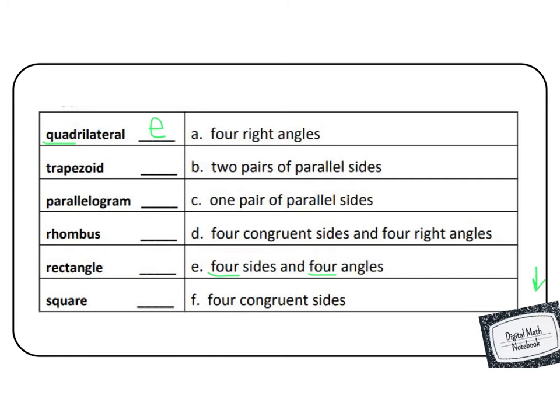Our next shape is trapezoid. A trapezoid has one pair of parallel sides. It doesn't have right angles. Well, it could, but its defining feature is one pair of parallel sides. So that would be C.